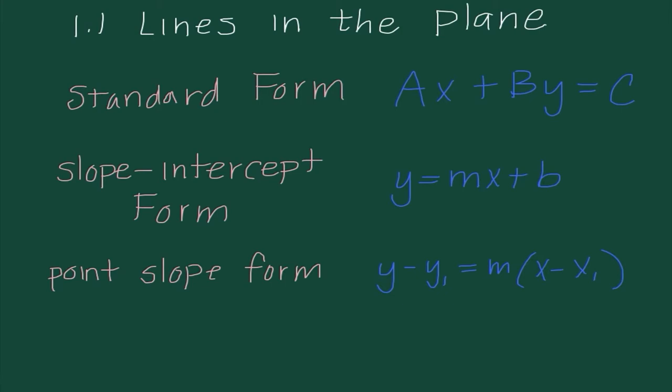The first thing I want to address: there are three different ways that we can write equations of lines. The first one you guys talked about a lot in Algebra 2 is called Standard Form, and that is Ax plus By equals C. We see that quite a bit in Algebra 2, but we tend not to use it as much in pre-calculus because we tend to set equations equal to Y so they're easier to put in our graphing calculator.